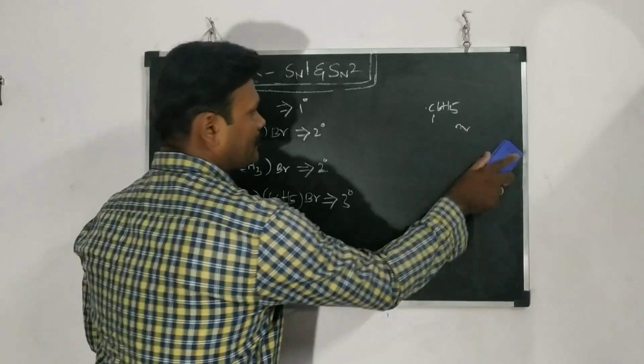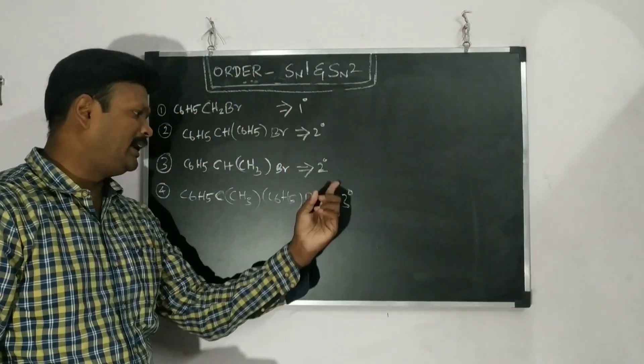Okay. The first factor is over. We find out the degree. It is 1 degree, 2 degree, 2 degree, 3 degree.